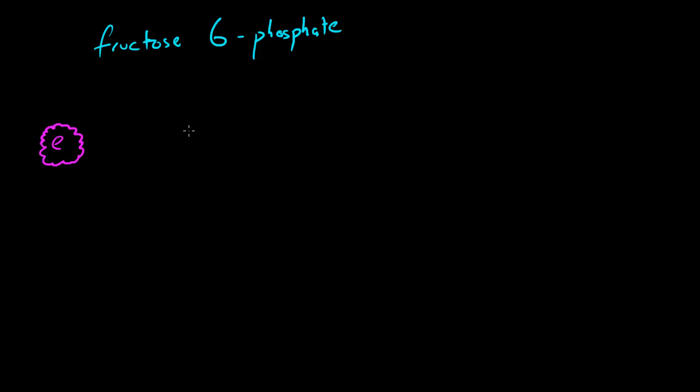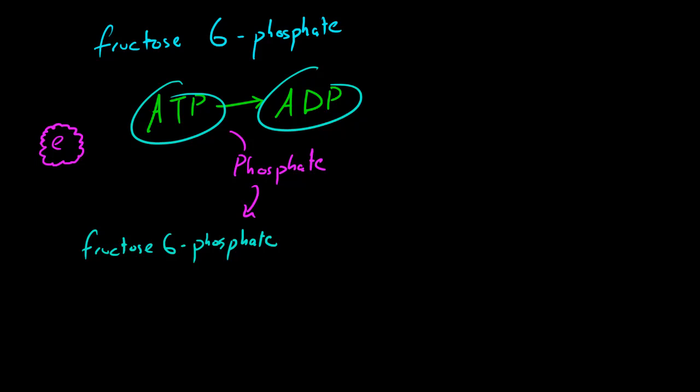What this enzyme does is it uses another ATP. Again, we need to use more energy. We're using more energy, and whenever we use ATP, it goes to ADP and loses a phosphate. What happens in this process is your fructose 6-phosphate gets the phosphate from ATP. This is pretty much a molecule that has fructose 6-phosphate plus a phosphate.